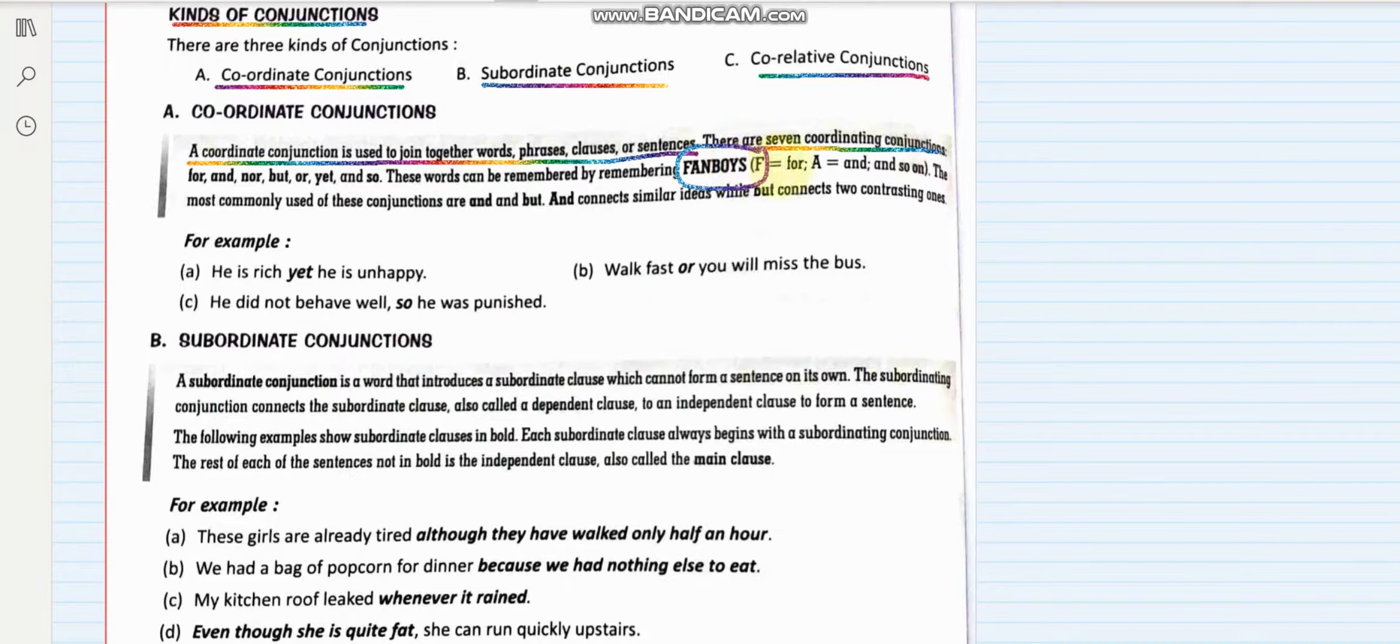F stands for 'for', A 'and', N 'nor' or 'neither', B 'but', O 'or', Y 'yet', and S 'so'. So these are the seven coordinating conjunctions that we have.